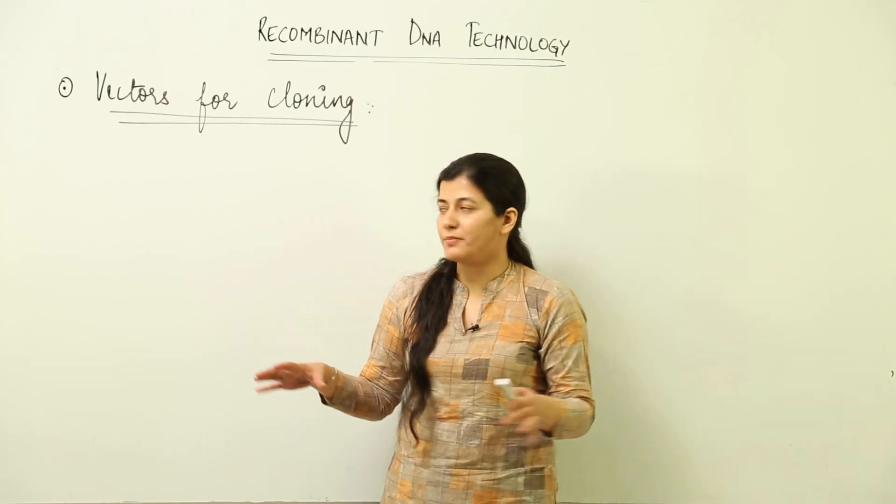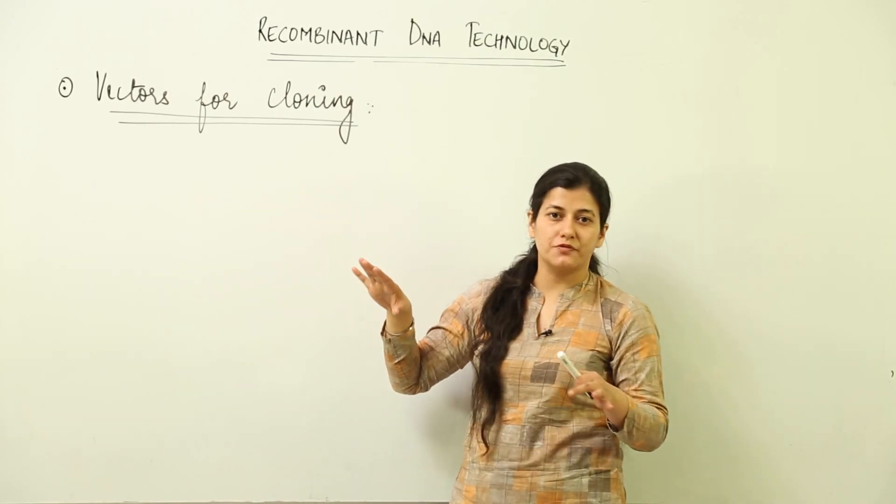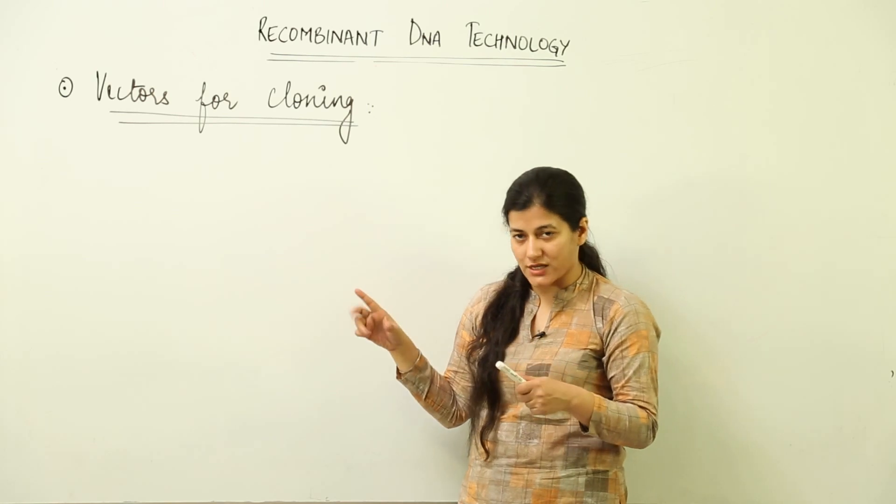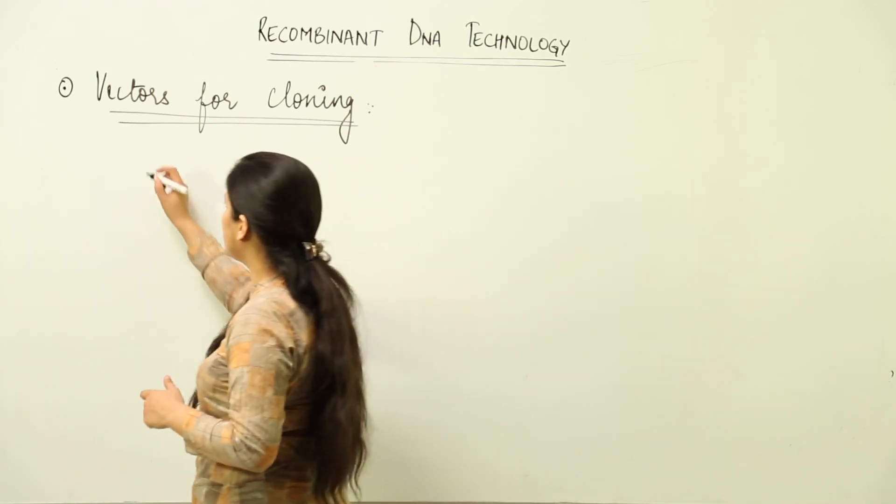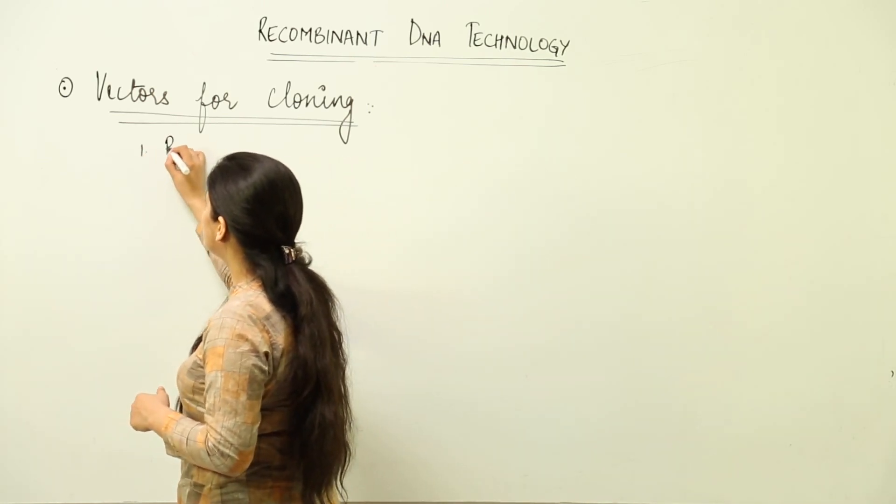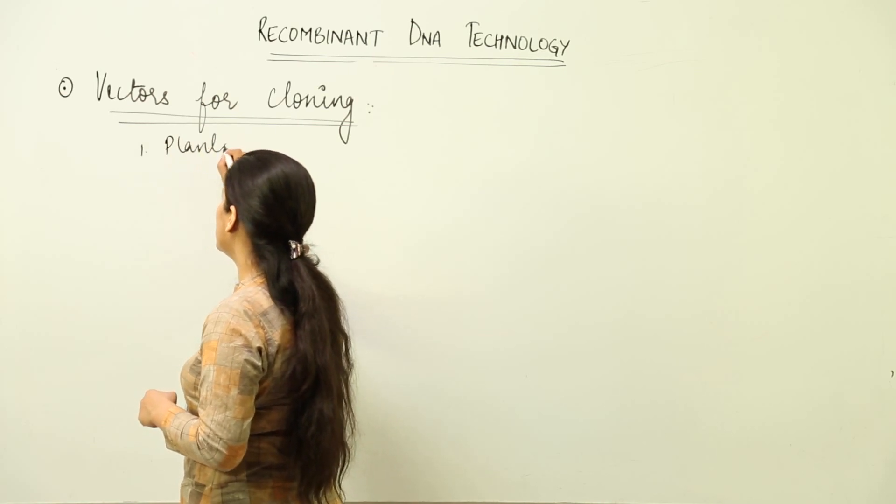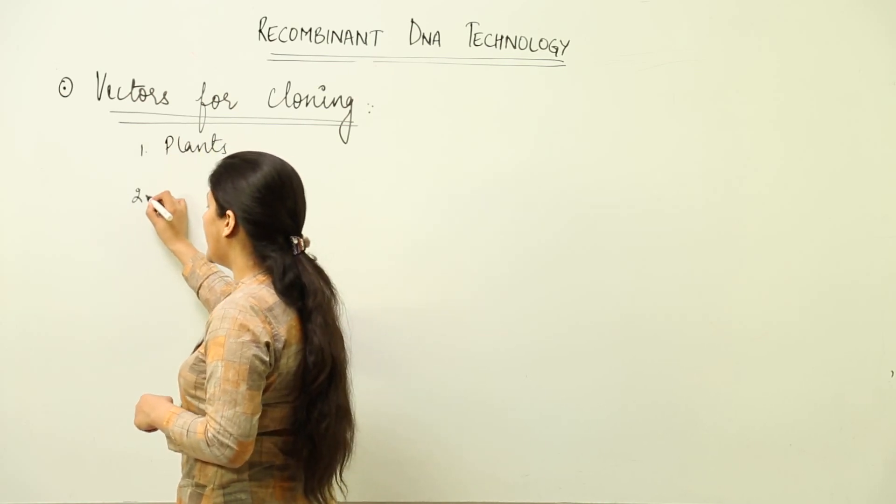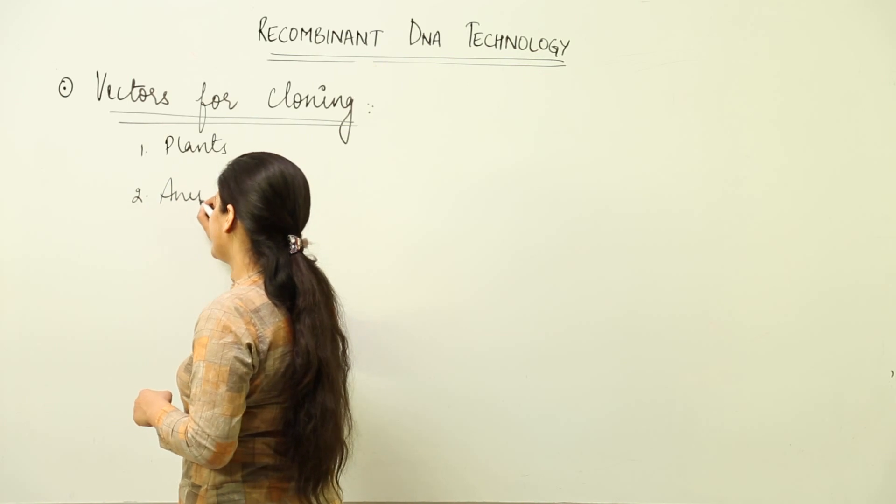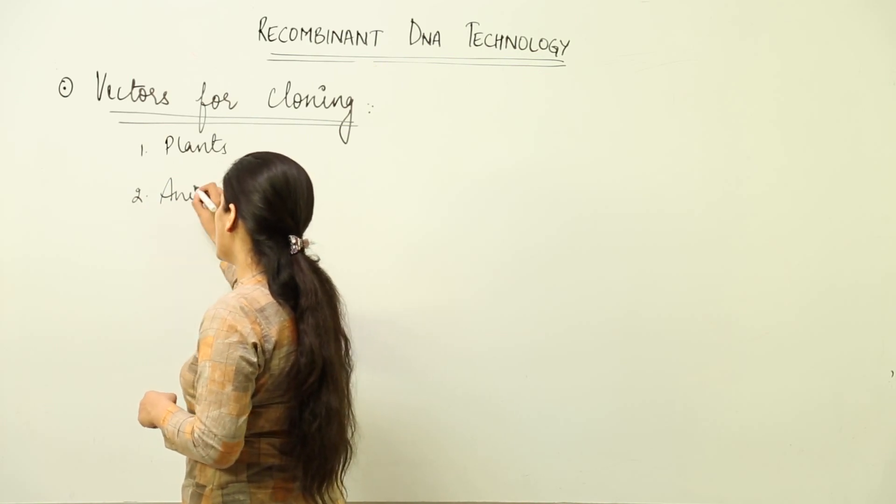Now we're going to talk about various vectors for cloning the gene of interest. In this lesson we are going to talk about the vectors for cloning genes in plants and in animals.